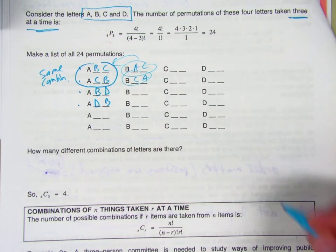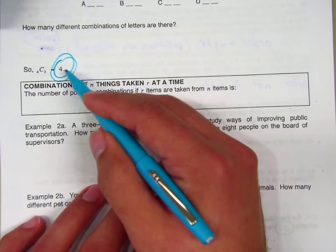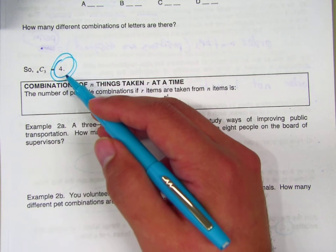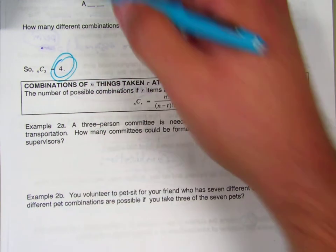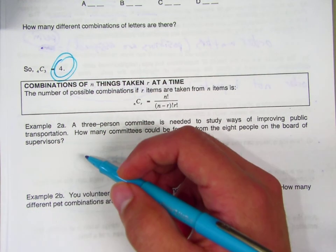The point of this, if you list them all out, is that there's only going to be four different groupings. 24 different orders, but four different groupings. Does that make sense?